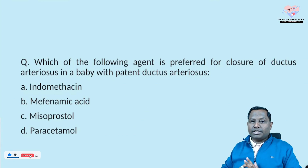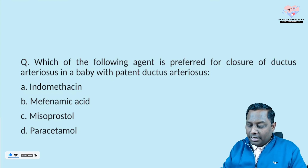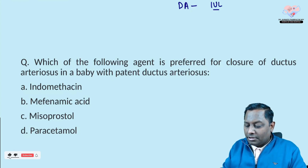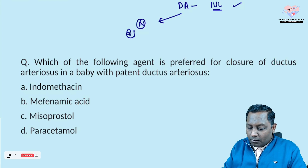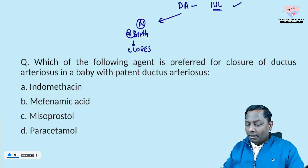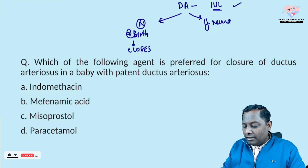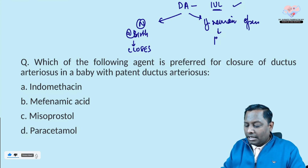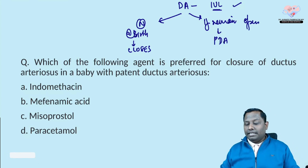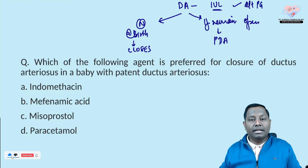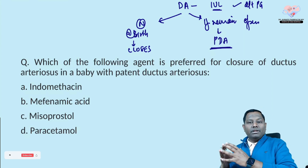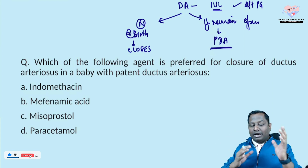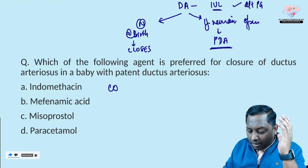Ductus arteriosus is normally present in intrauterine life, but at birth it normally closes. If the ductus arteriosus remains open, we call it patent ductus arteriosus. This patency in intrauterine life is mainly due to prostaglandins. So if there is a continued supply of prostaglandins, the patient will have patent ductus arteriosus. What we are going to do is cut down that supply, and for that we will use a COX inhibitor.